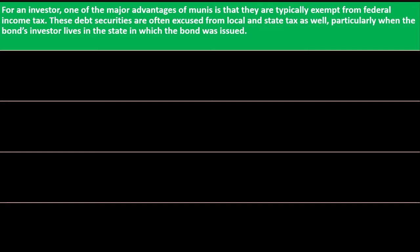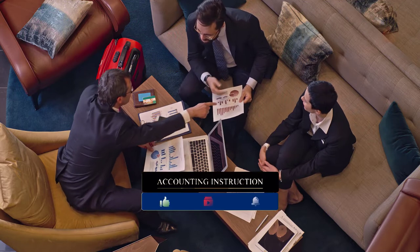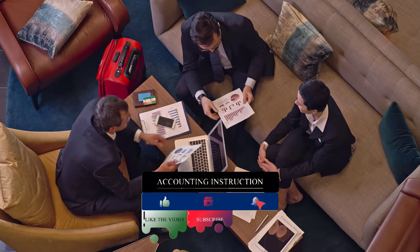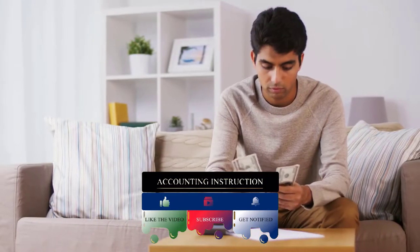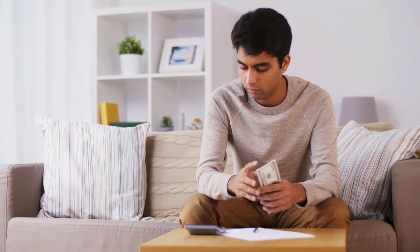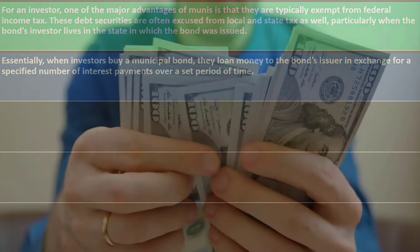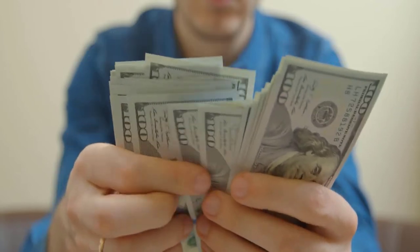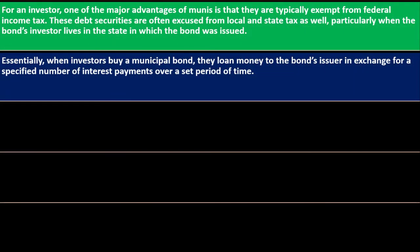One of the major advantages of munis is that they are typically exempt from federal income tax. These debt securities are often excused from local and state tax as well, particularly when the bond investor lives in the state in which the bond was issued. When we say non-taxable, we're typically talking about the interest — the earnings. When you buy the bond you're paying money out, so that's not a taxable event. The tax is triggered when you're earning interest, and the question is whether you have to report it.